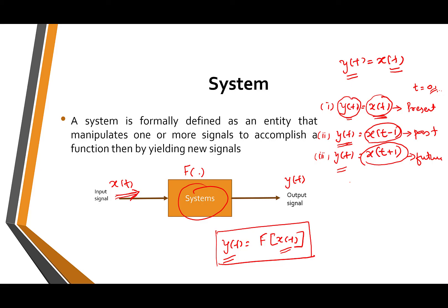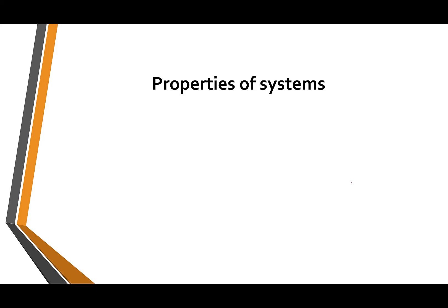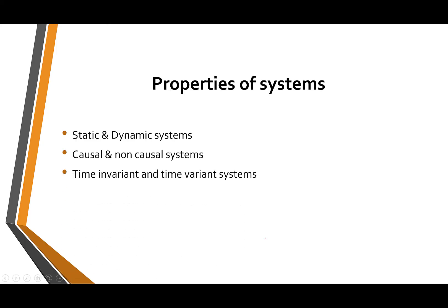So these are features we will learn about — system properties are very important, and each property will have a separate video. The types of properties are: first, static and dynamic systems; second, causal and non-causal systems; fourth, linear and non-linear; and stable and unstable systems. We will go into detail on each of these.